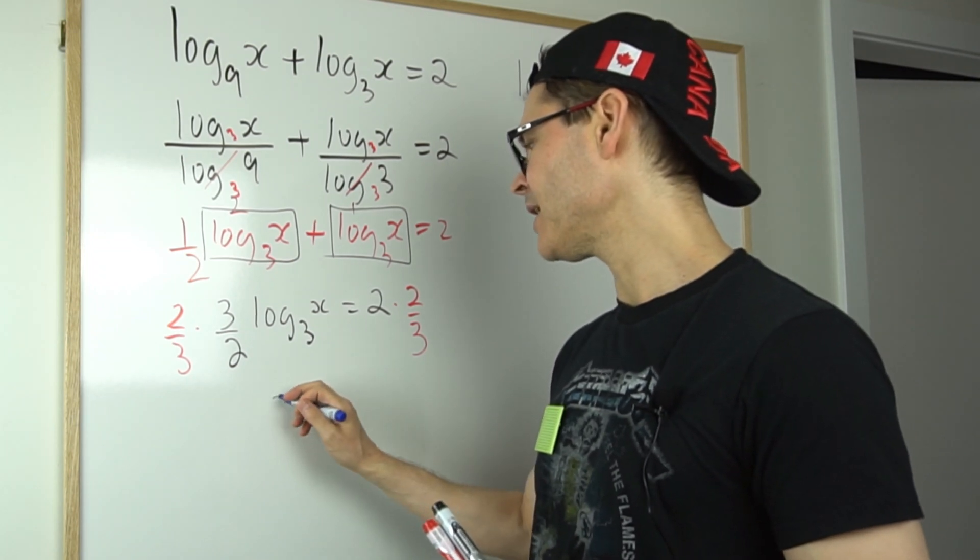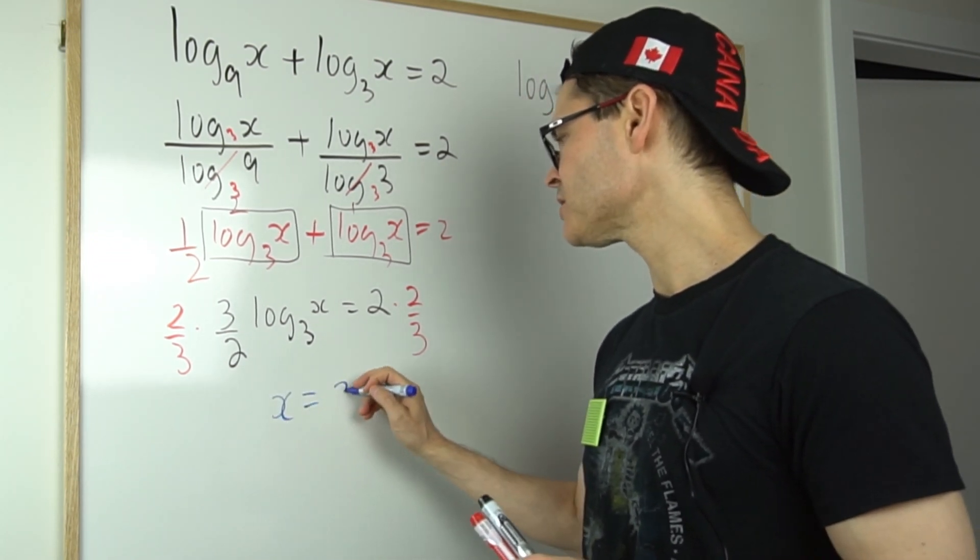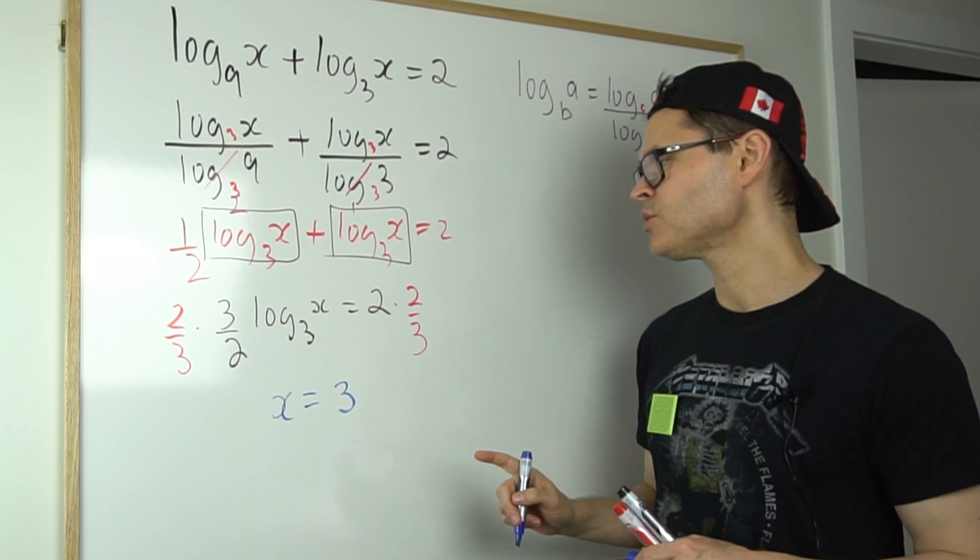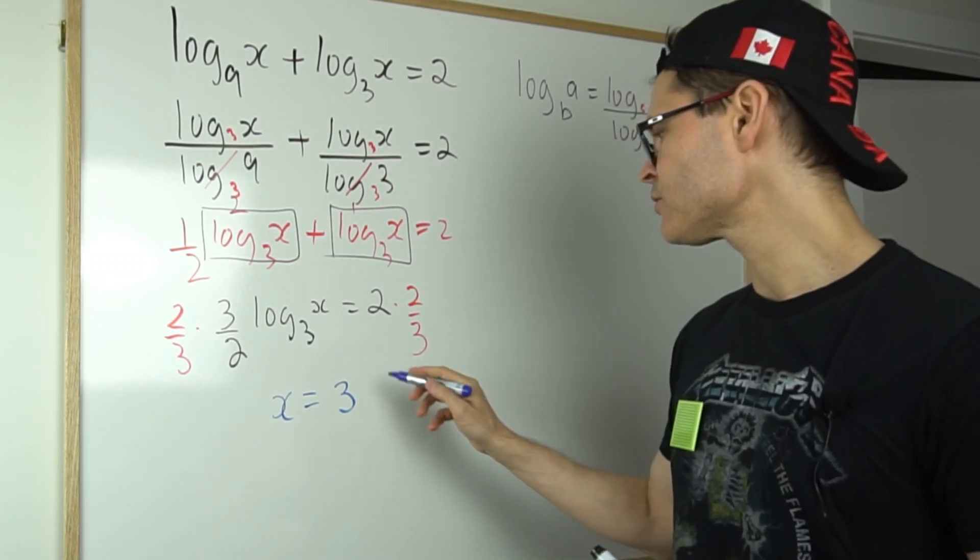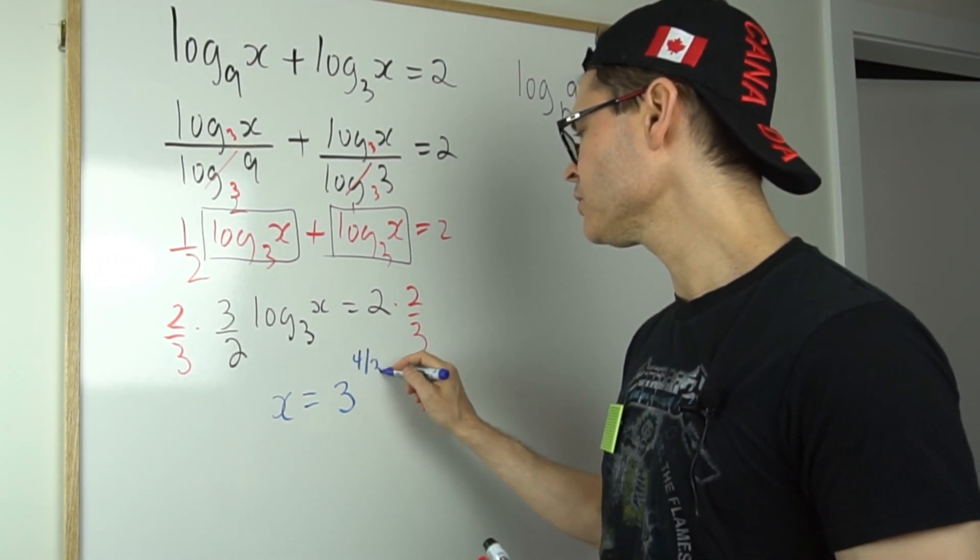So I could simply say now that x is equal to three, well two times two over three is four over three, to the four over three.